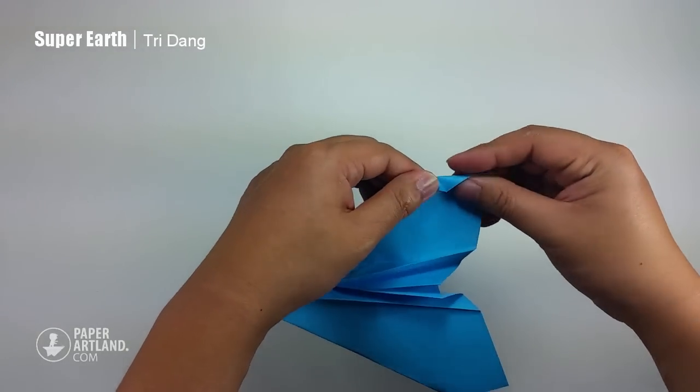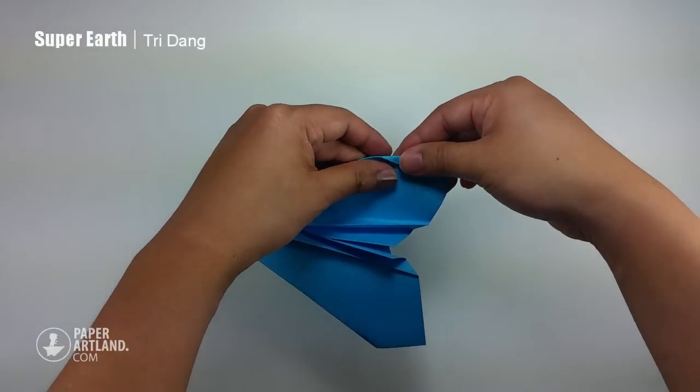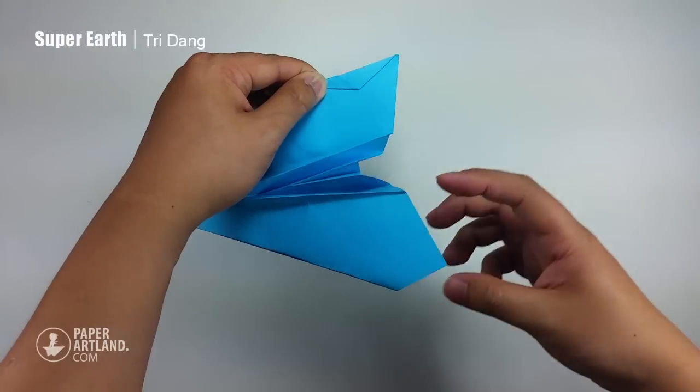I will fold it up to create the side stabilizer. So just fold it up to make a straight fold. Just fold it up. Also for this side.